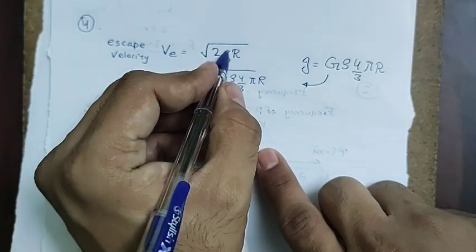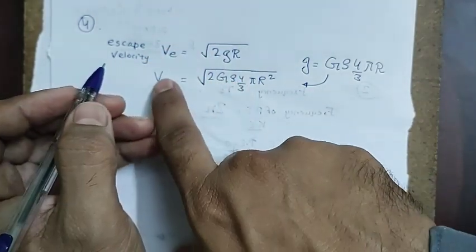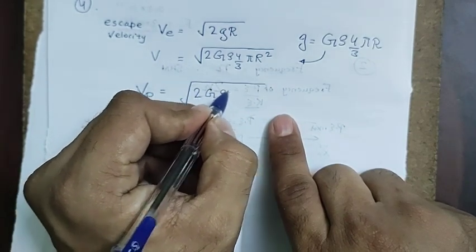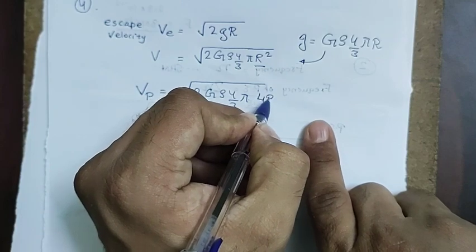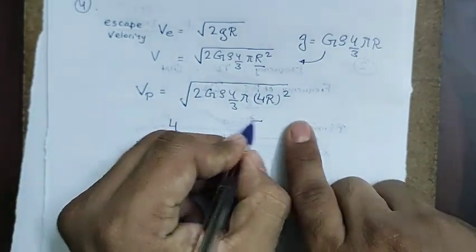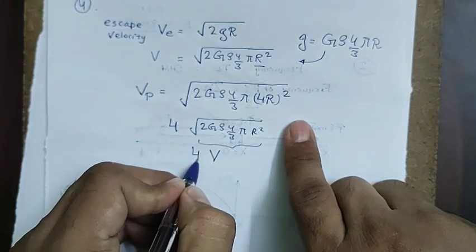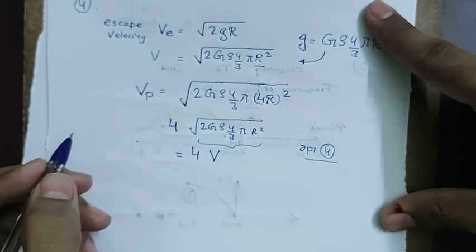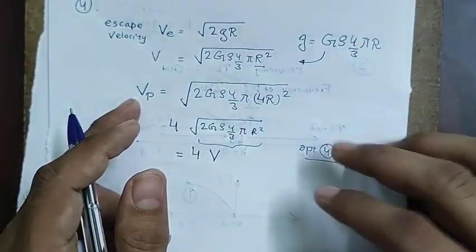For the other planet, density is the same but radius is 4 times. So escape velocity becomes 4 times that of Earth. If Earth's escape velocity is v, the other planet's escape velocity is 4v — option 4.